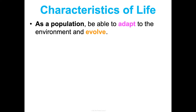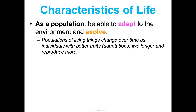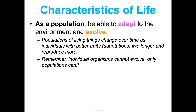Another characteristic is that as a population, you have to be able to adapt to the environment and evolve. Remember, organisms do not evolve — populations do, because evolution has a genetic basis and individuals can't change their genes. However, as populations change over time, individuals that naturally have better traits — those are adaptations — will live longer and reproduce more. So we should see those traits become more common and the gene pool of the population changing over time.